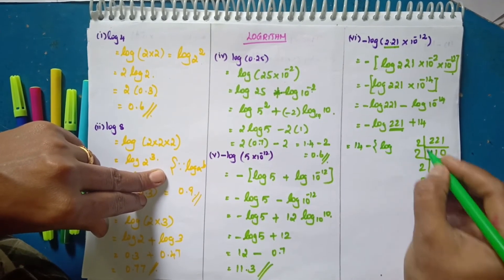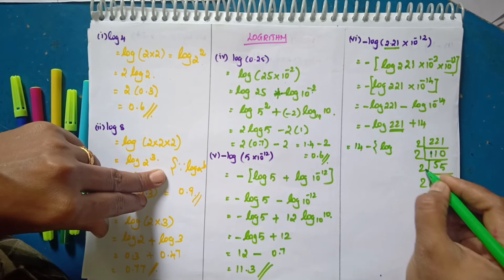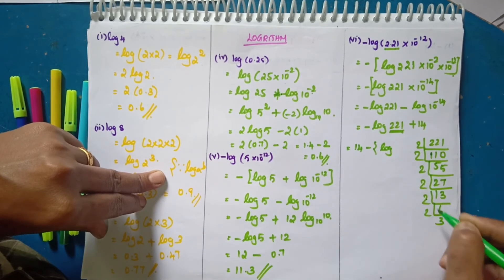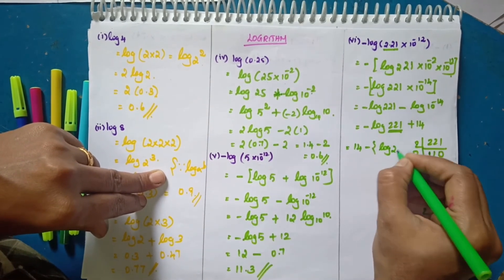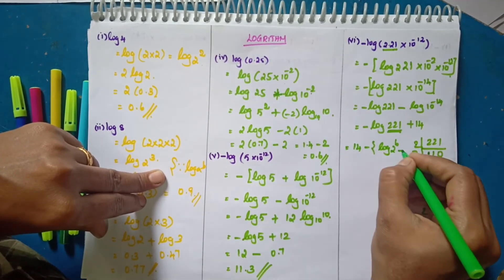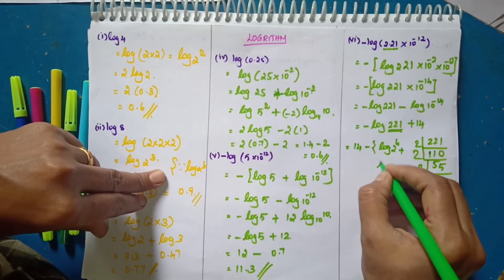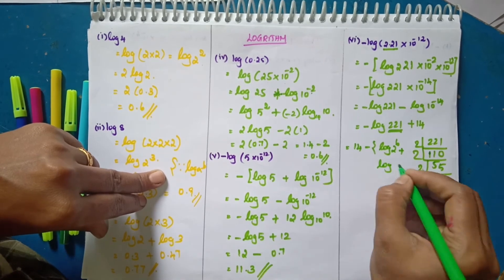So: 14 minus log of 2 power 6, plus log 3.